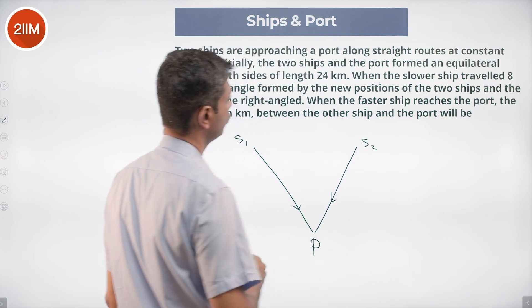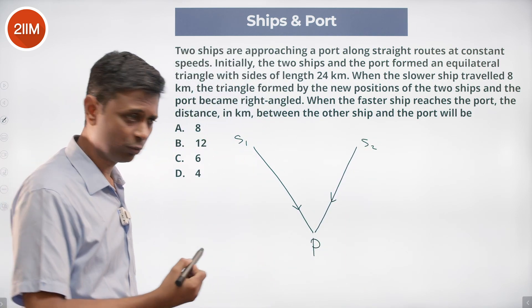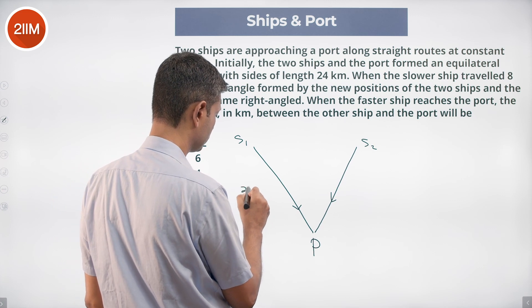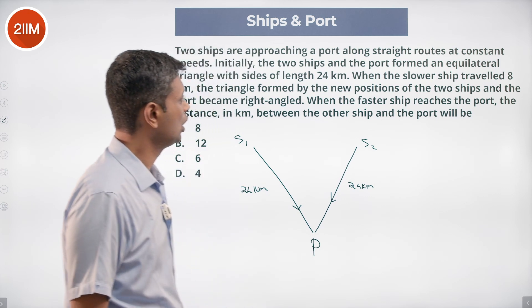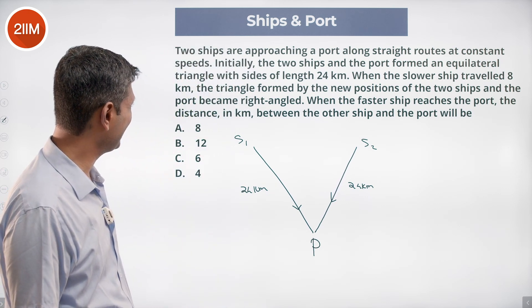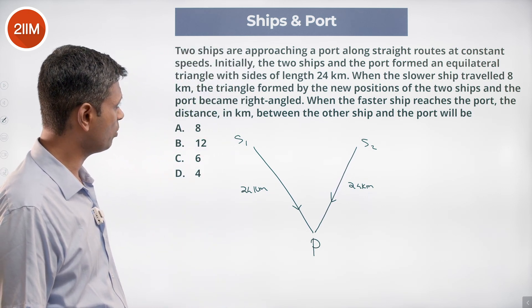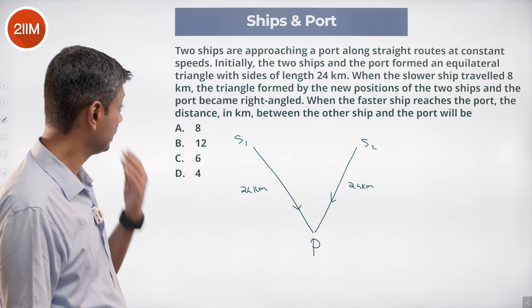So this is 24, this is 24 kilometers. When the slower ship traveled 8 kilometers, the angle formed by the new positions of the two ships and the port became a right angle.